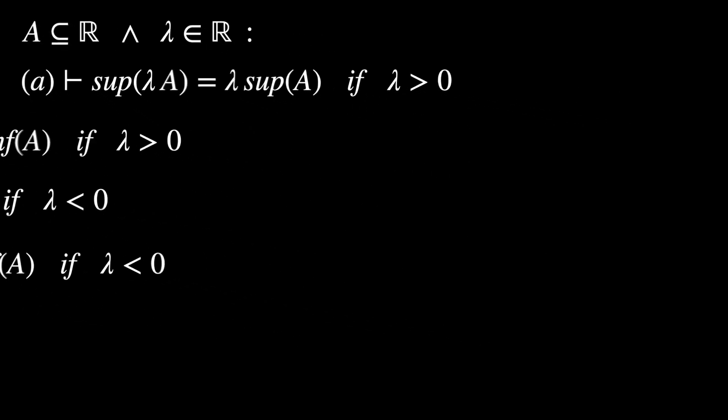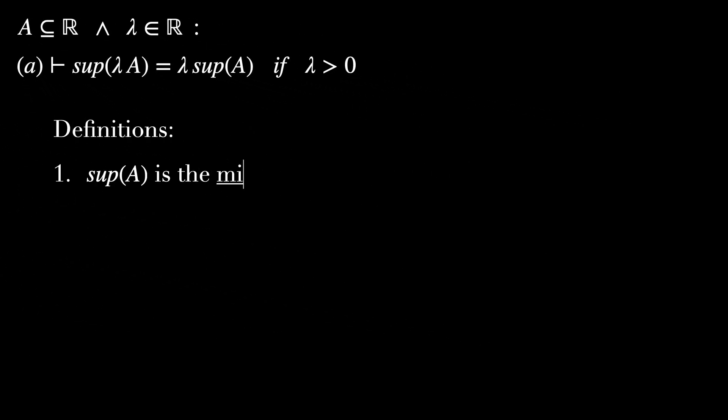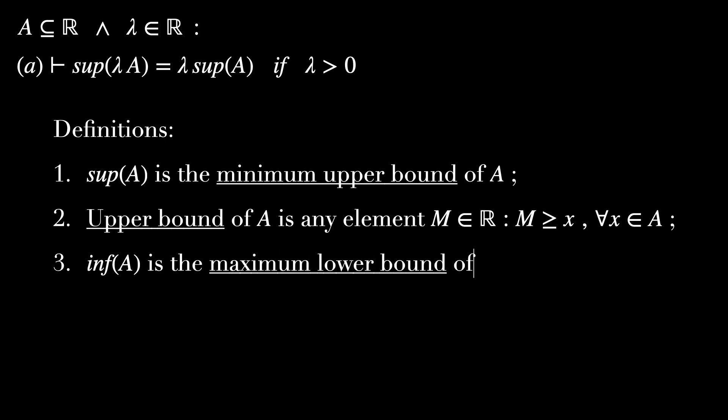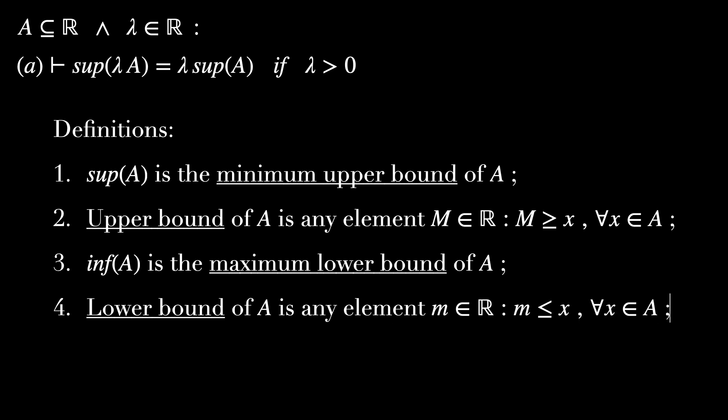Let's start with the first one, but before going further, we need to define a few things. The supremum of A is defined as the minimum upper bound of A. The term 'upper bound of A' means an element M in R such that M is greater than or equal to any element in A. We also specify that lambda A is the set of elements lambda times x, for elements x in A.